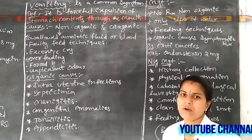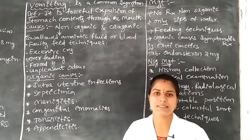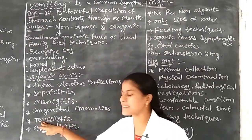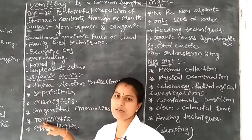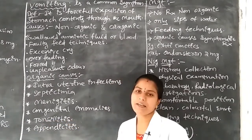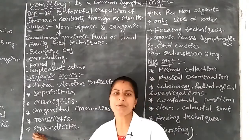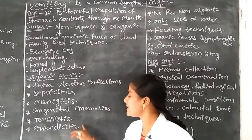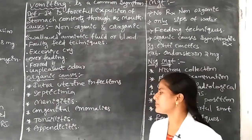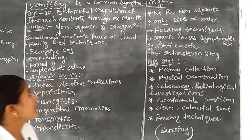Another organic cause is tonsillitis — inflammation of the tonsils. The tonsils are a normal structure in the infant's digestive system, and they can be affected by viral or bacterial infection. Next is appendicitis — the appendix is a normal anatomical structure, and when it becomes infected by viruses or bacteria, the infant may develop vomiting as a symptom. These are the causes of vomiting.